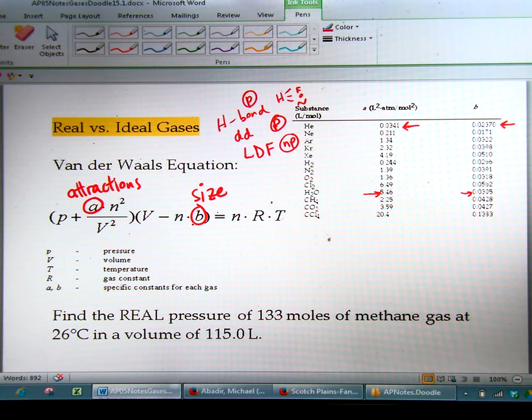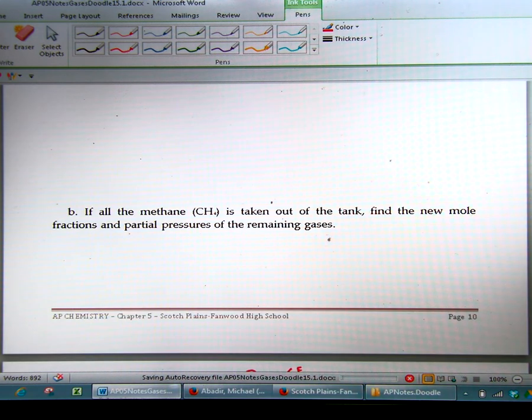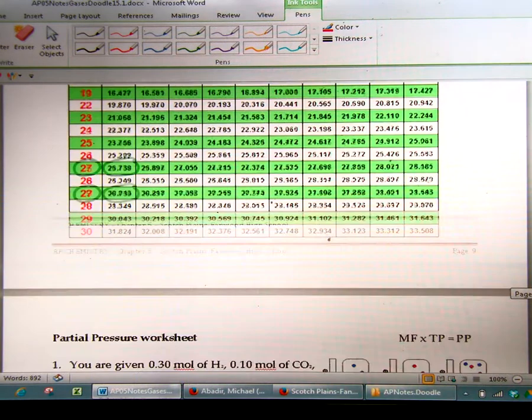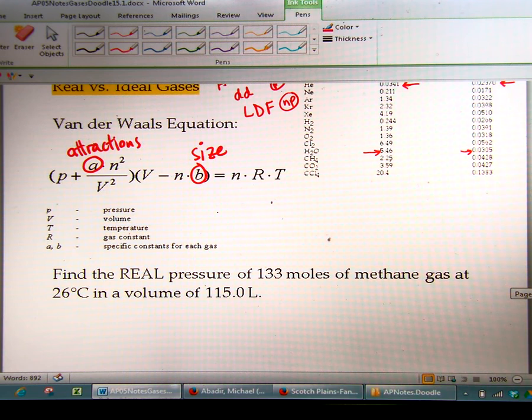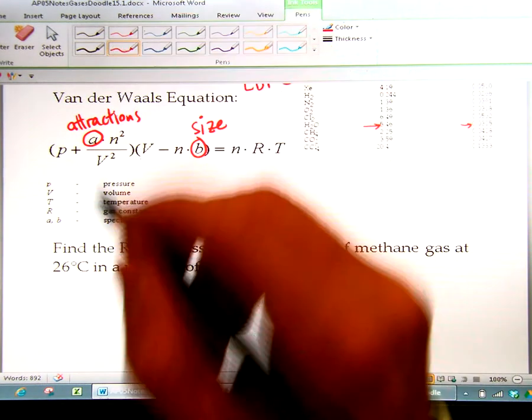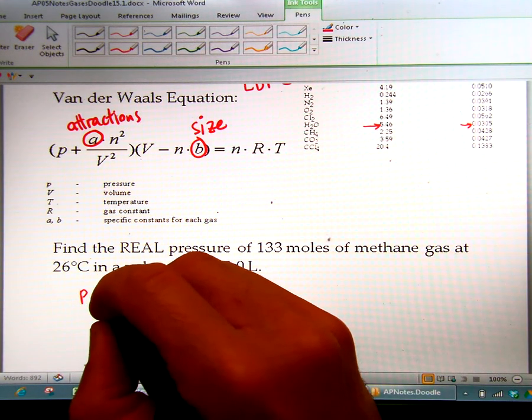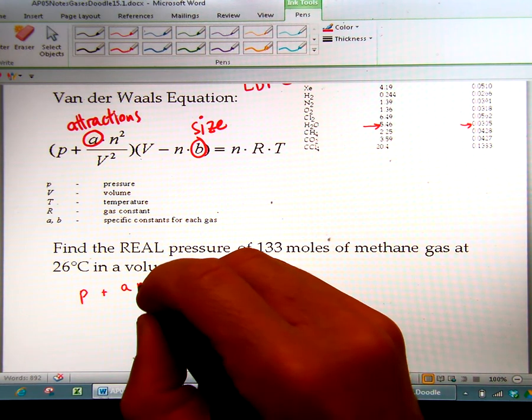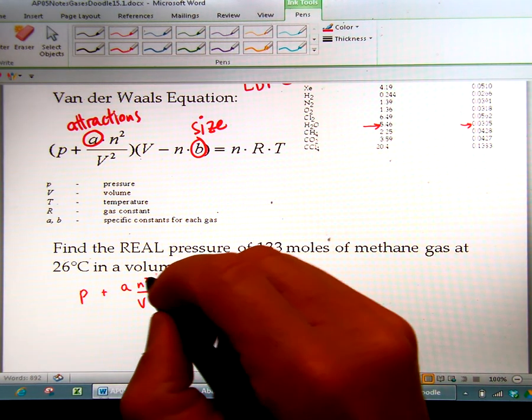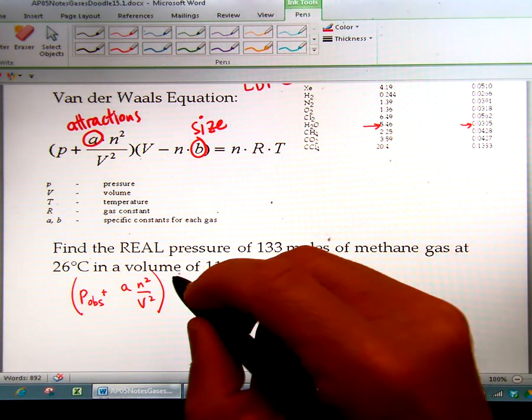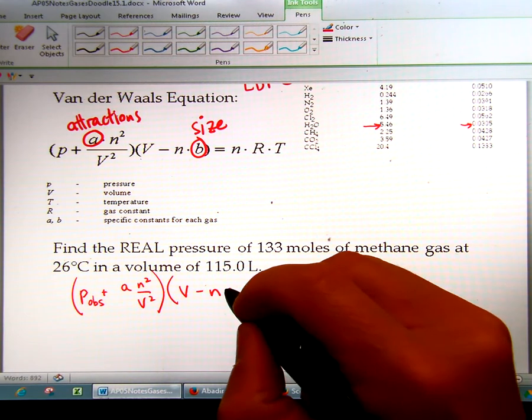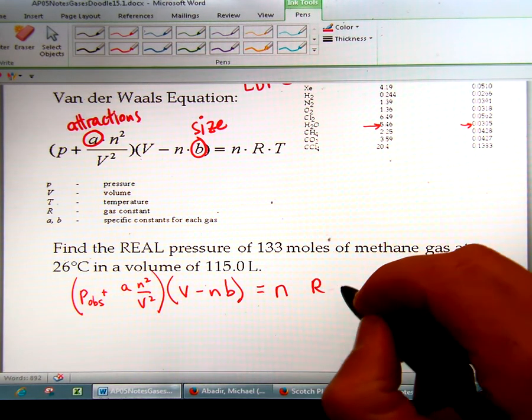So now what we're going to do is solve the Van der Waals equation for this problem. We're going to have 133 moles of methane. So we're going to copy down the exact equation as we see it. So P plus A times N squared over V squared, and that whole quantity. Now this is called the pressure observed, I'm going to write OBS for observed, times volume minus NB equals NRT.